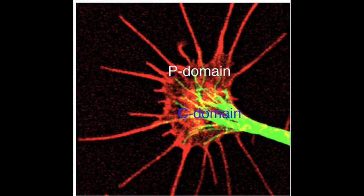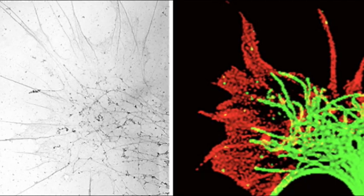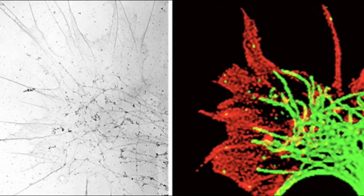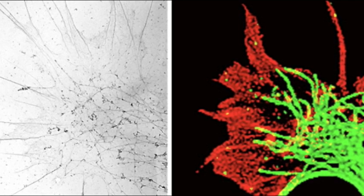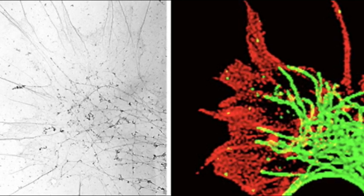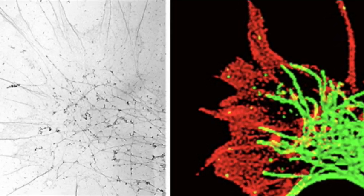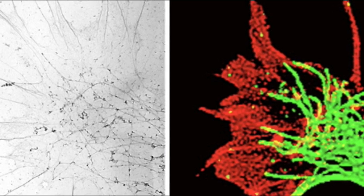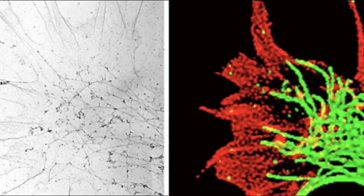At the growth cone, the microtubule bundle in green spreads out and single microtubule ends penetrate a network of actin filaments in red, which are polymers of actin protein subunits. Microtubules and actin filaments are dynamic polymers whose ends grow and shrink by adding and losing subunits. Actin filaments disassemble completely, but microtubule ends may shrink a bit and then regrow.